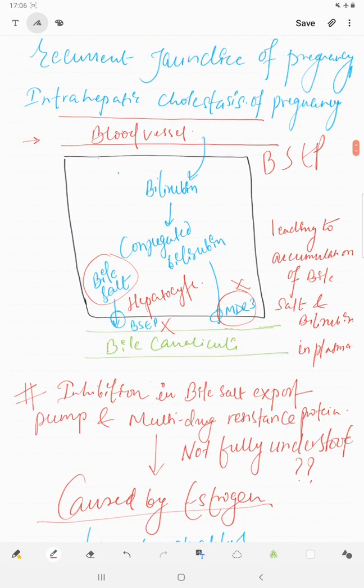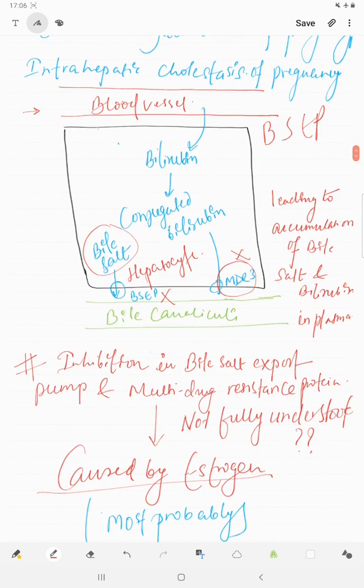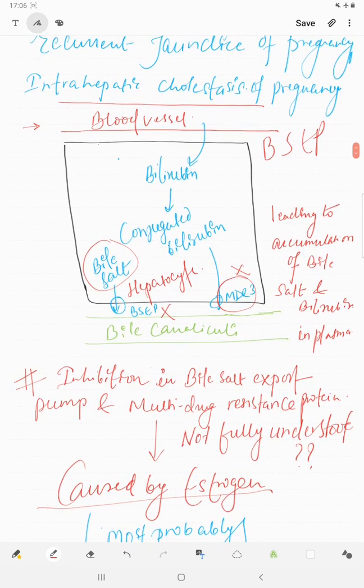Talking about pathogenesis of this disease, once BSEP and MDR3 are inhibited, there will be accumulation of bile salt and conjugated bilirubin in the hepatocytes, which will accumulate in the plasma.